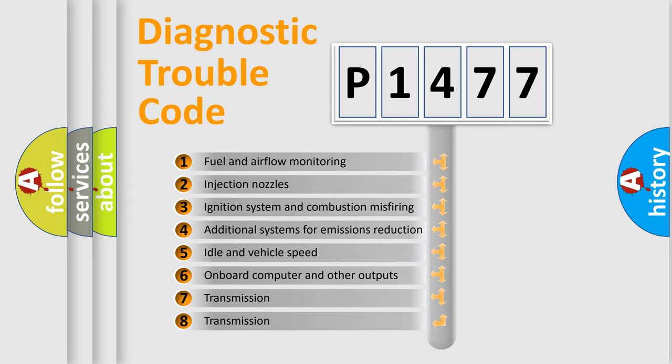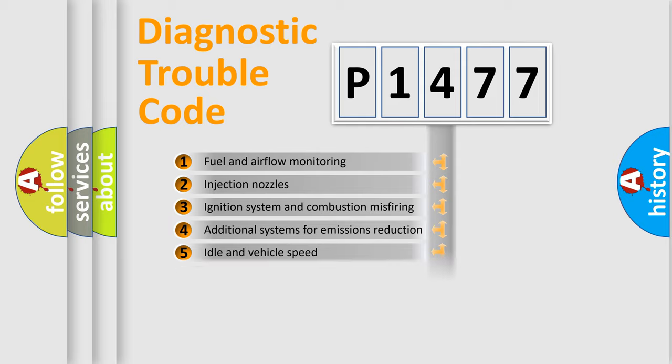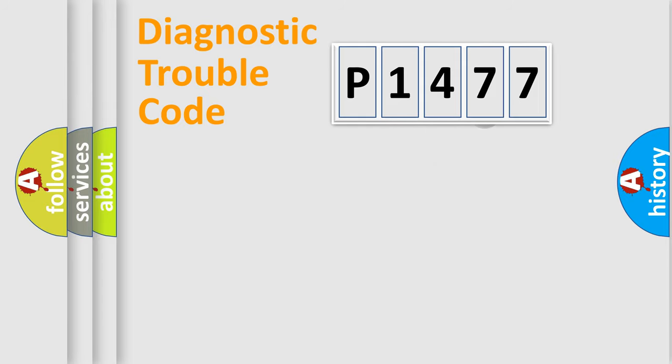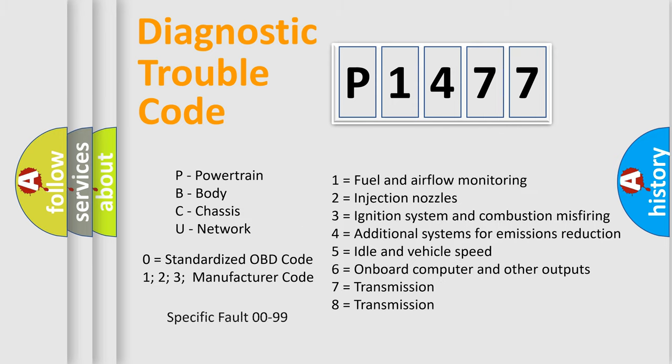The third character specifies a subset of errors. The distribution shown is valid only for the standardized DTC code. Only the last two characters define the specific fault of the group. Let's not forget that such a division is valid only if the second character code is expressed by the number zero.